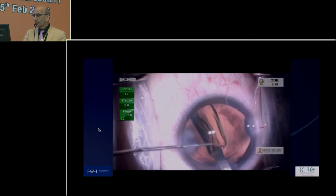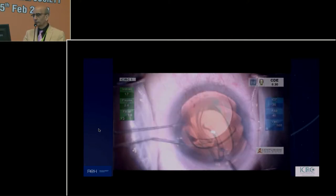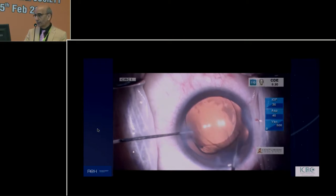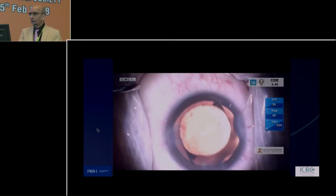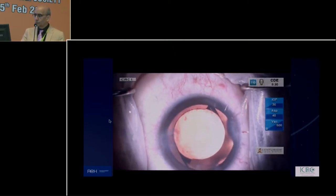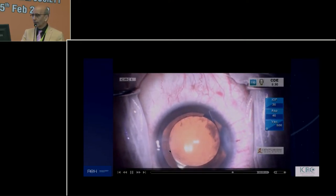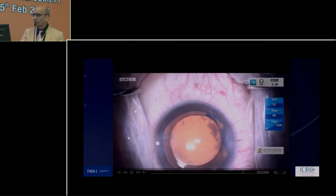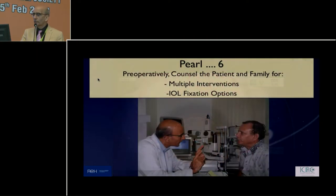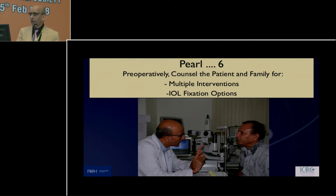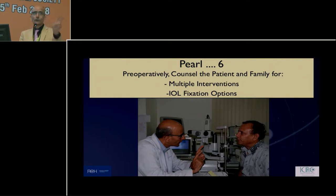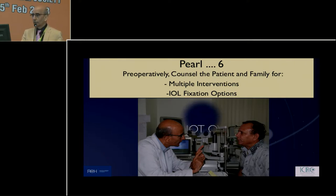I find hydrophobic IOLs good because they open up slowly. Use cohesive viscoelastic in the bag so that unfolding will not damage the posterior capsule. Pulse 6: always preoperatively counsel the patient about the possibility of two procedures — either at the same time or at two different times. We now do them at the same time when possible. If you promised a toric or premium lens, give them the option but be clear about this.